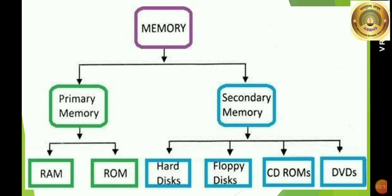Children, now we will see the chart of computer memory. Memory has two types — we can divide memory into two parts. First is primary memory and second is secondary memory. Primary memory has RAM and ROM. This is internal memory. Secondary memory has hard disk, floppy disk, CD-ROM, DVD, etc.